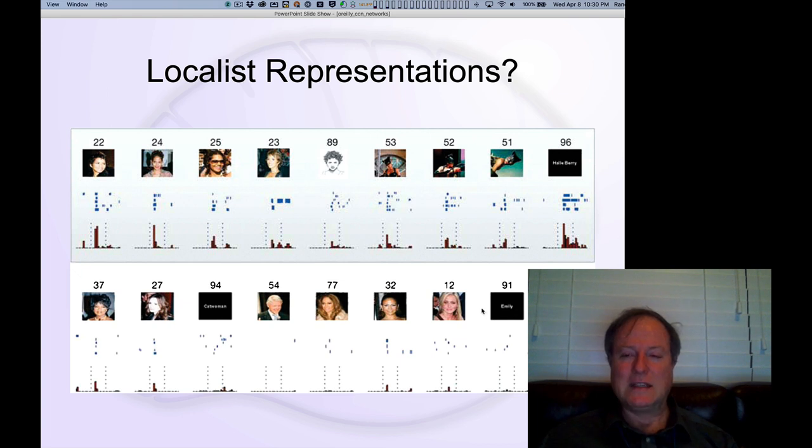There is some sense in which, if you really pushed it harder, there is a kind of distributed representation here, a graded response, even though this neuron does have a remarkable affinity for Halle Berry.